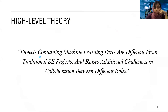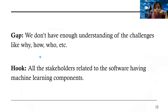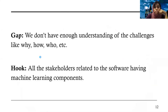The high-level understanding we have right now is that machine learning parts are different from traditional software engineering projects and raise additional challenges — that's all we know. The gap is that we don't understand the challenges, we don't know why or how they are occurring, who is facing them, or whether there are any best practices. We don't know how to help when people face such challenges. The hook is that if we start to understand these challenges, we can standardize the project process or develop targeted support — otherwise we cannot.